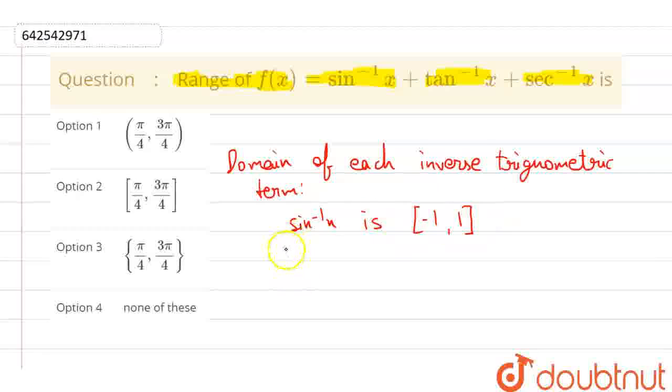And sec inverse x domain is open bracket minus infinity to minus 1 close bracket union close bracket plus 1 to infinity open bracket.